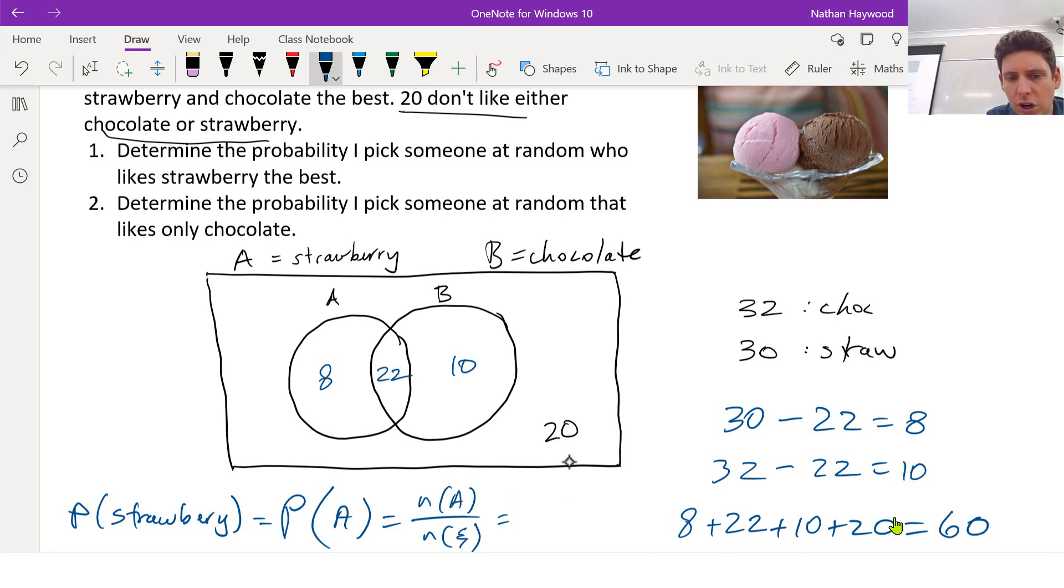So we have how many in A? 30. And how many total? 60. So 50% like strawberry. Would you have predicted that?